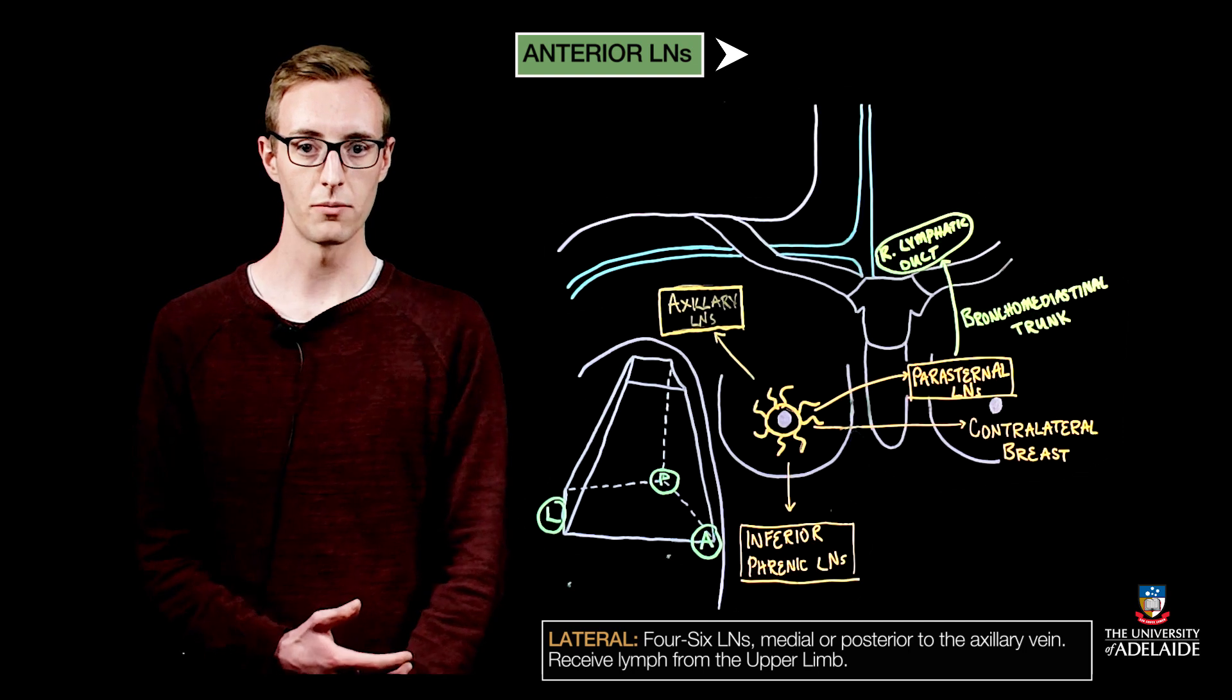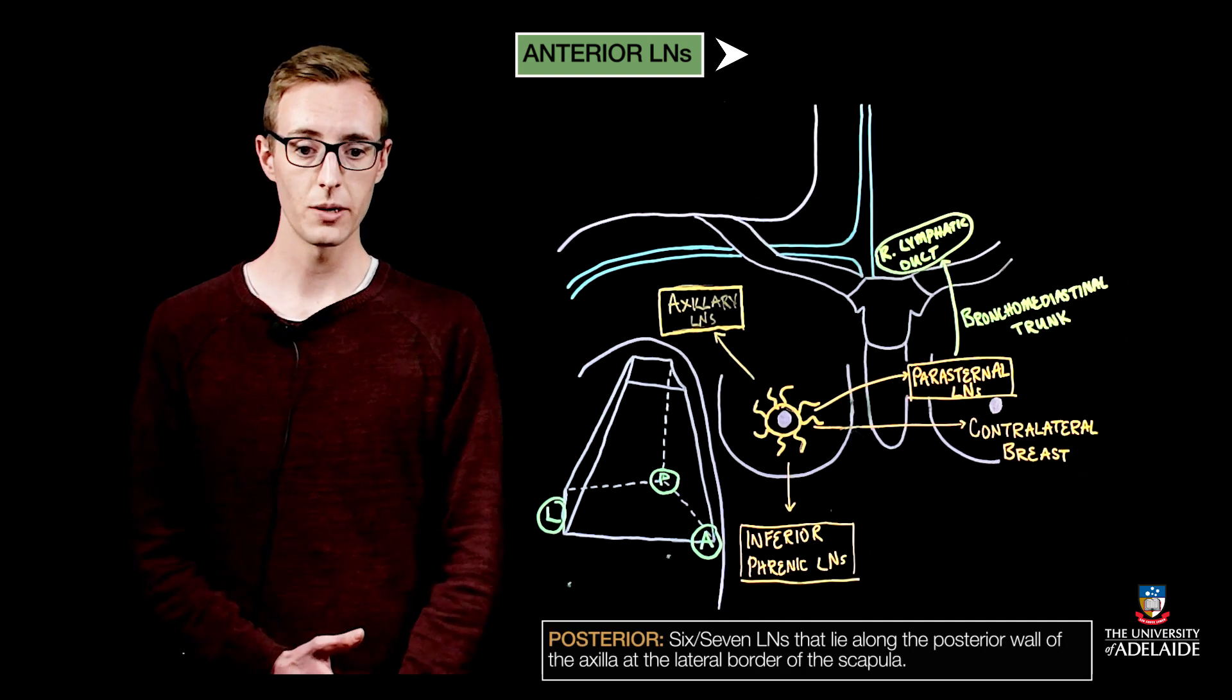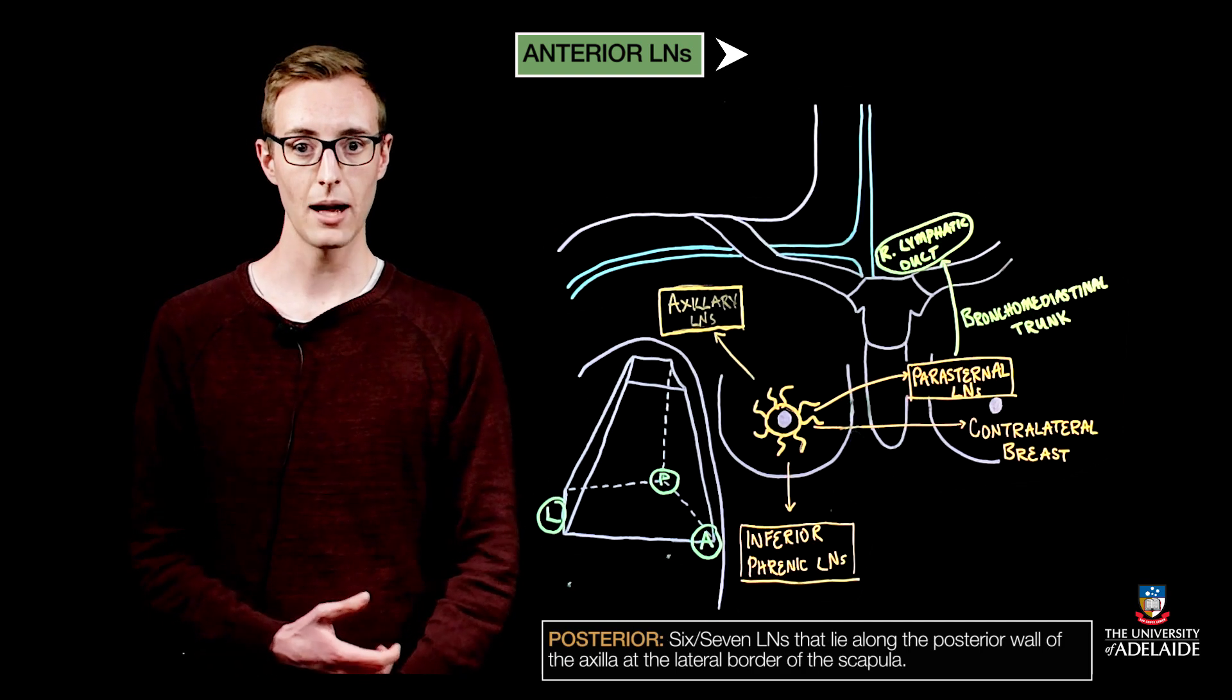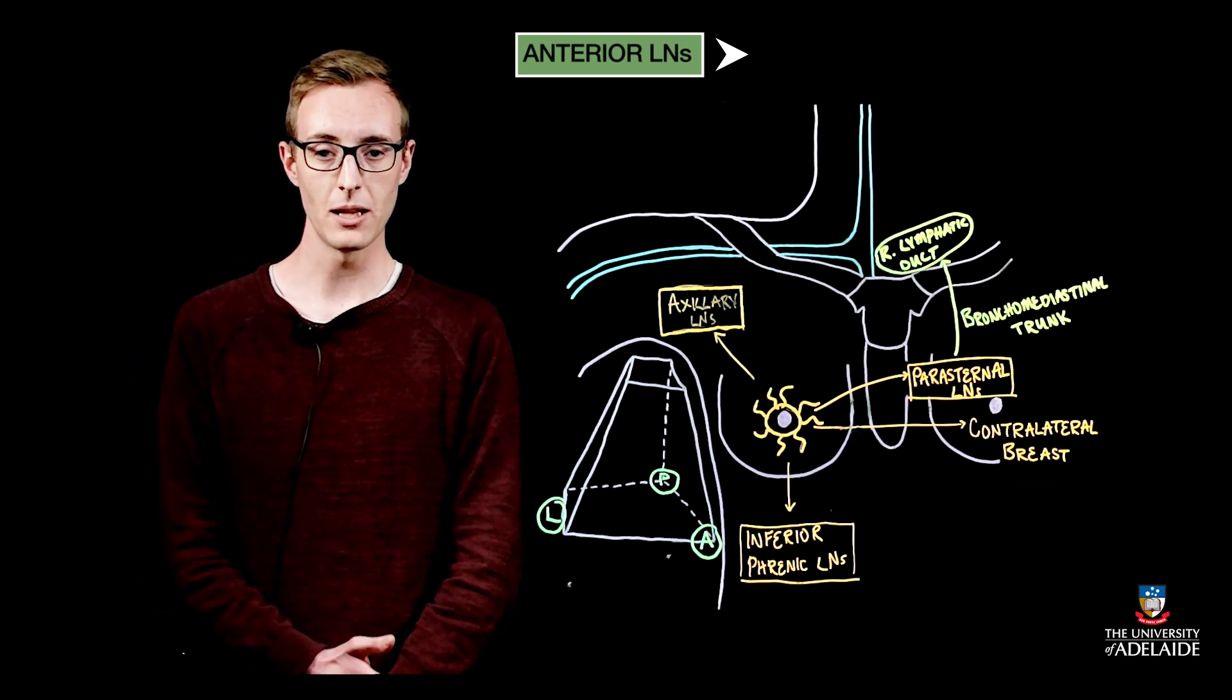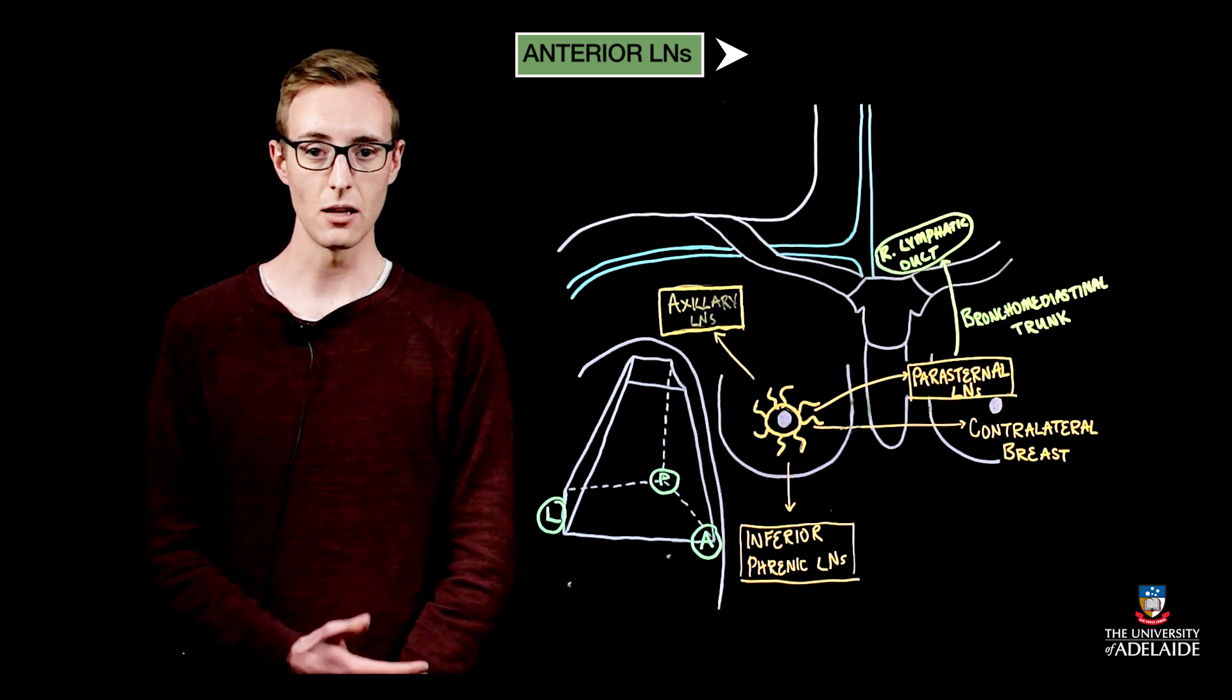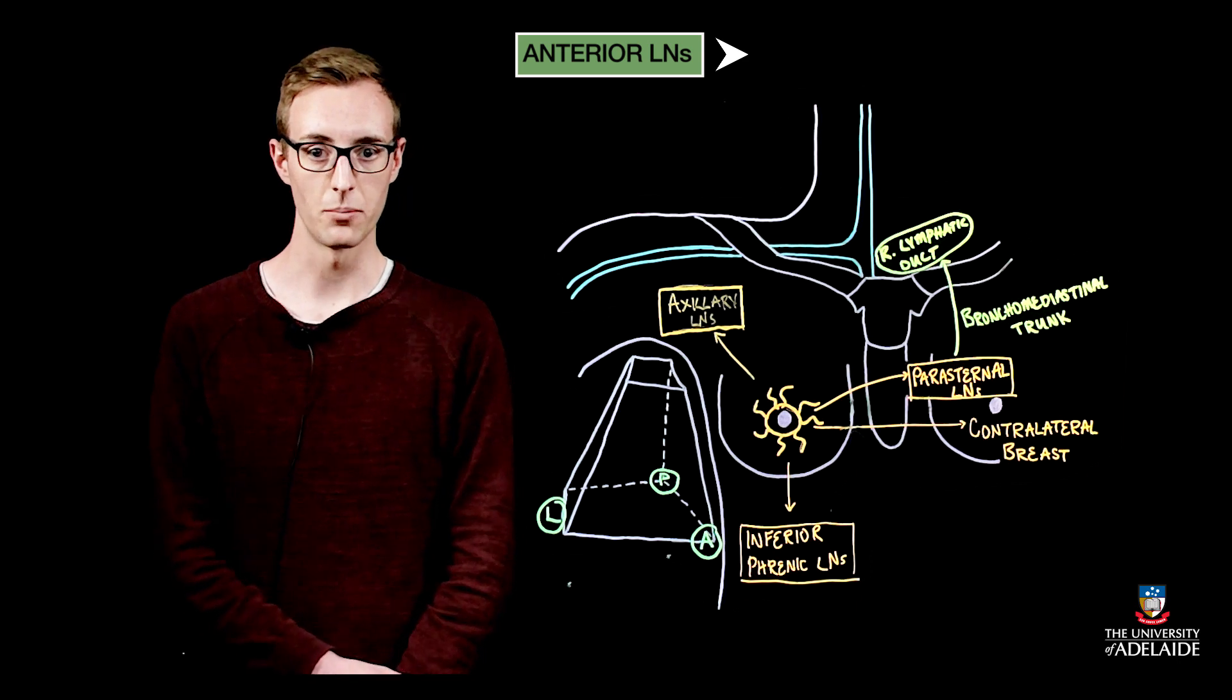The lateral group receives lymphatic drainage from the upper limb and the posterior group receives lymphatic drainage from the back and scapular regions. The pectoral group sits on the medial wall of the axilla and is related to the inferior border of the pectoralis minor muscle.